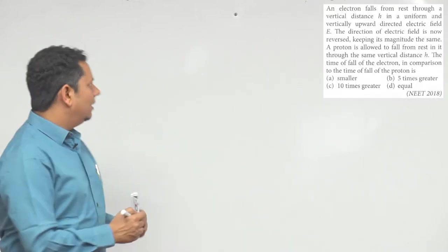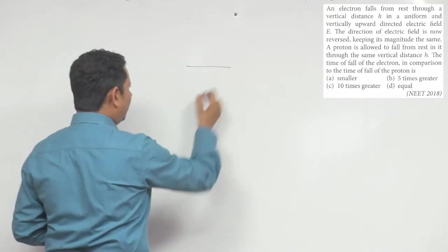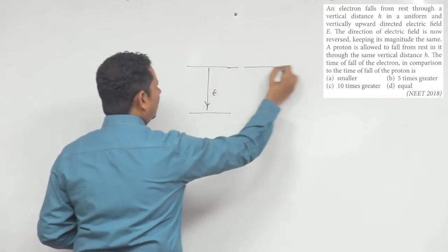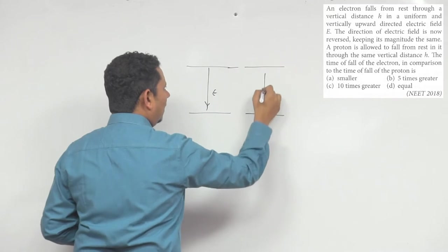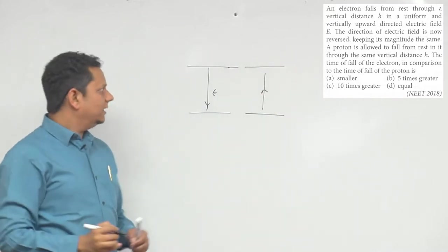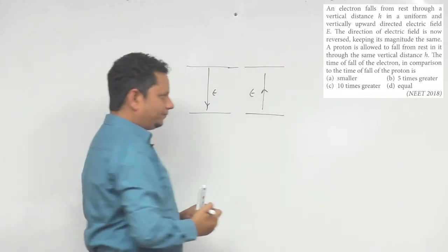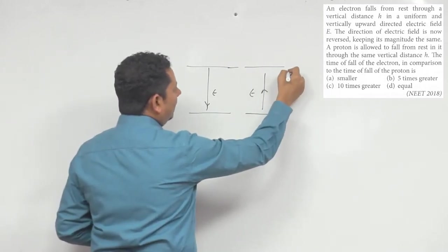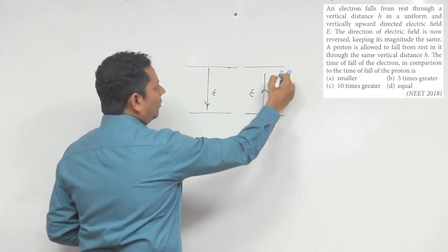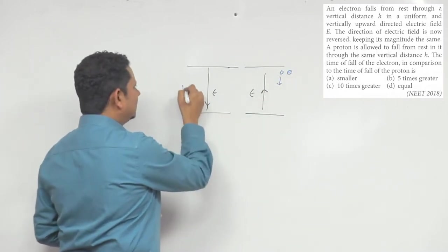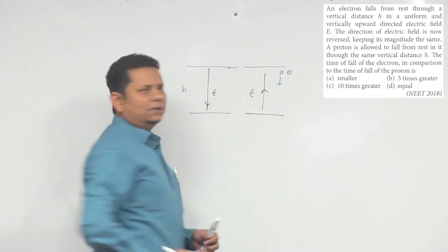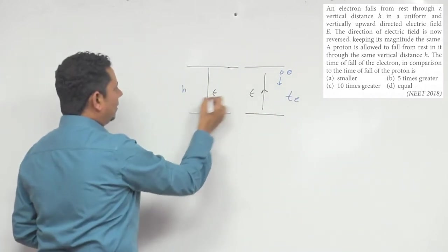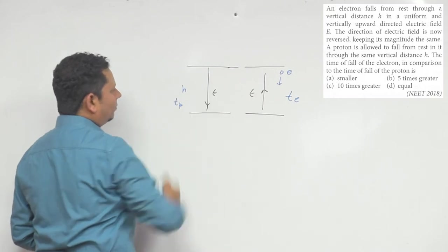To solve this, we consider two regions. In the first case, the electric field points in one direction and the electron is released from rest, falling height H in time t_e. In the second case, the electric field direction is reversed and the proton is released from rest, falling the same height H in time t_p.